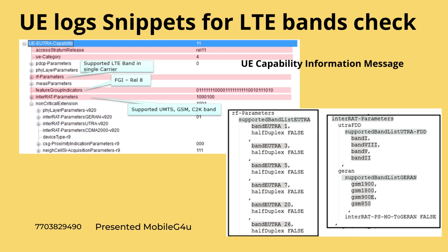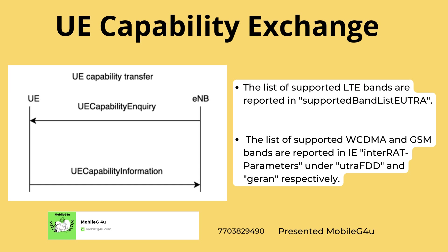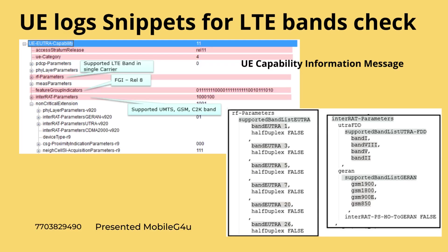With the help of this UE Capability Information message, you can see all the bands supported in your UE device. This is an RRC message — UE Capability Information — and it will come once the eNodeB inquires the UE to share its capabilities. The UE replies with UE Capability Information, and you will get all these parameters showing what all bands are supported.